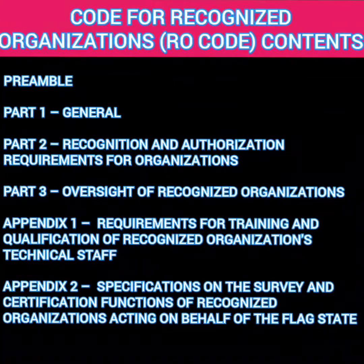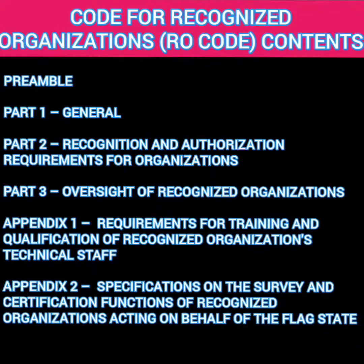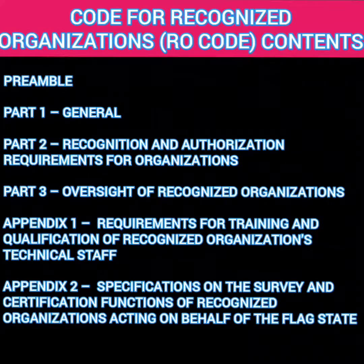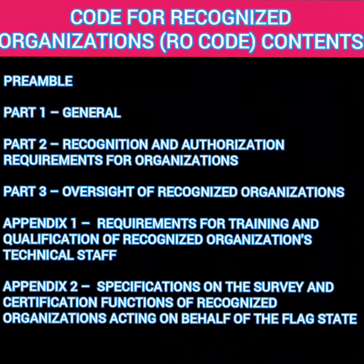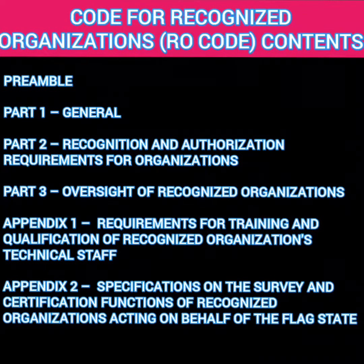This code has three parts. Part 1 and Part 2 are mandatory while Part 3 is recommended. Part 1 heading is 'General', Part 2 is 'Recognition and Authorization Requirement for the Organizations'. Part 1 covers general information regarding the code, and Part 2 talks about the various requirements for an organization to be recognized and get authorization. The recommended Part 3 is 'Oversight of Recognized Organizations' — a recommendation for the flag administration on how to keep oversight over recognized organizations.